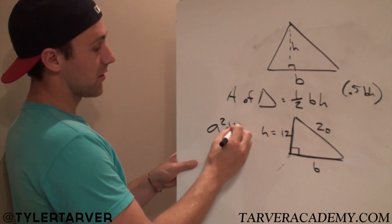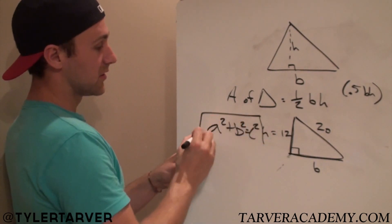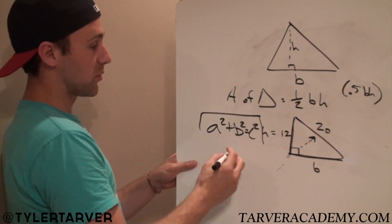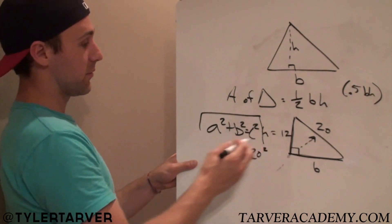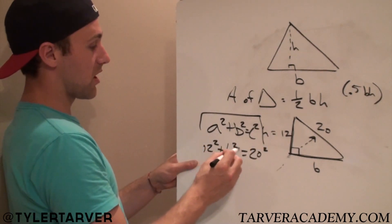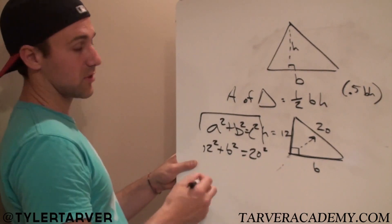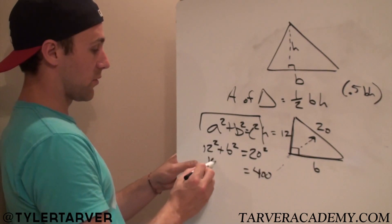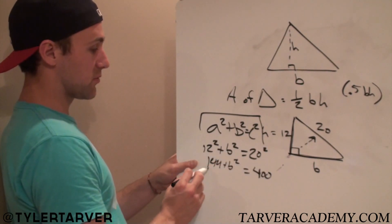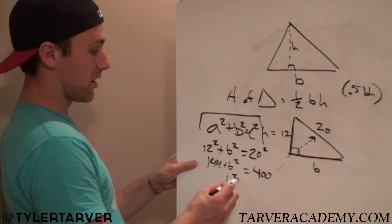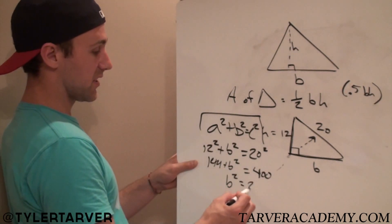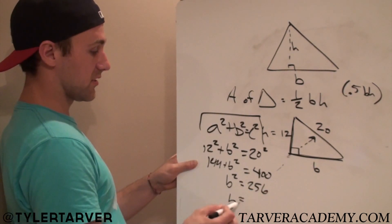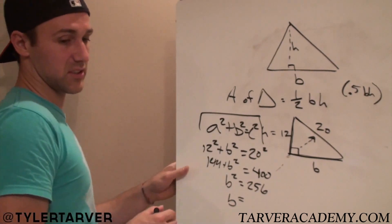A squared plus B squared equals C squared. Remember, C is our most important, it's the one that's opposite the right angle. So, 20 squared, and then we've got 12 squared plus B squared. B I put as base. So, whatever. Alright, let's solve it. 20 squared is 400. 12 squared is 144 plus B squared. We have to solve it. 20 squared equals, what is that, 256.